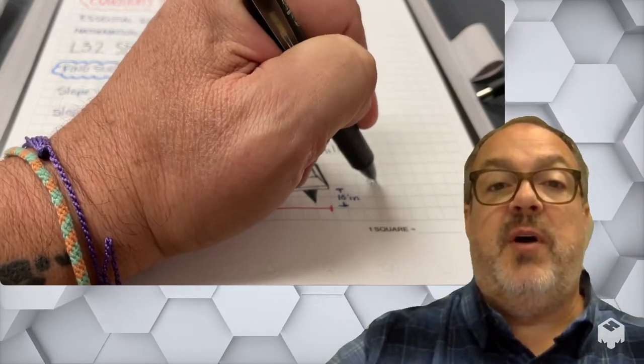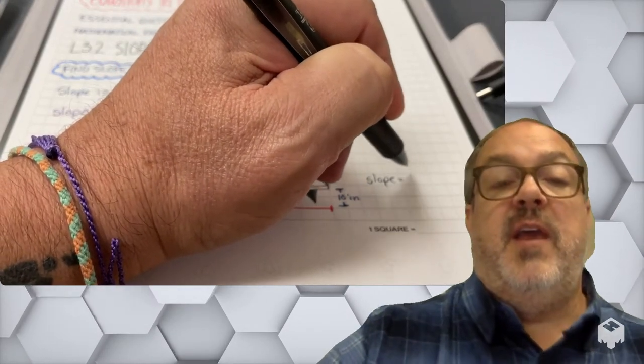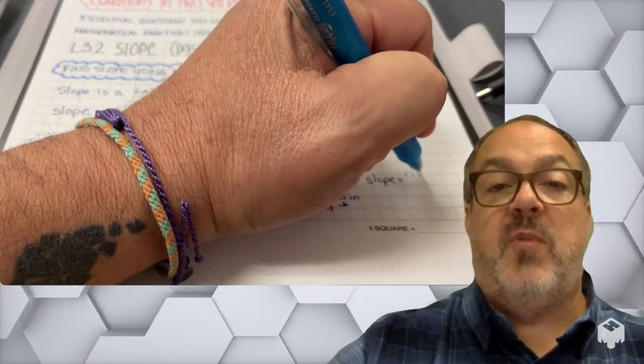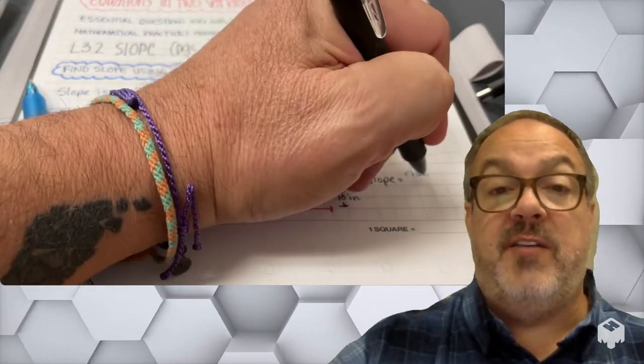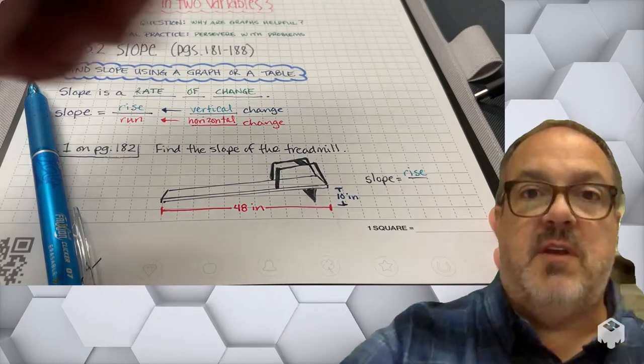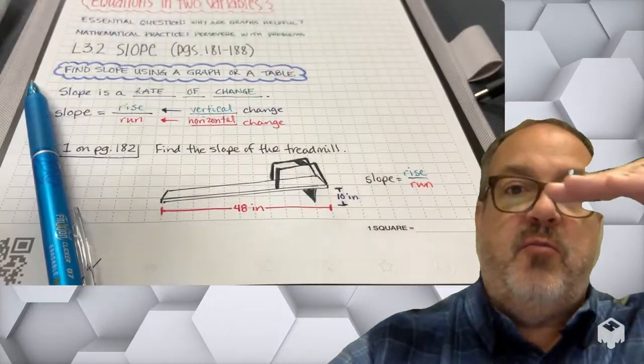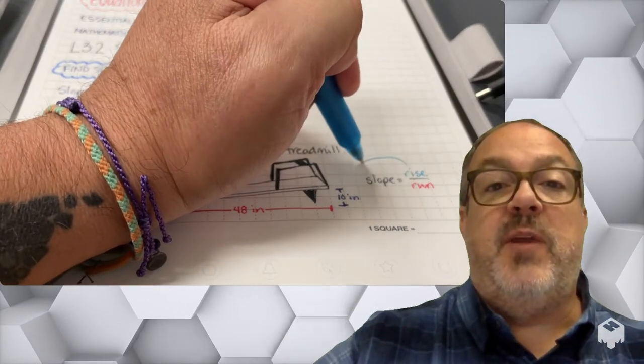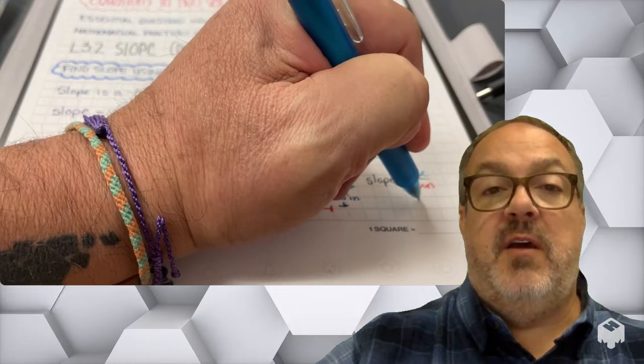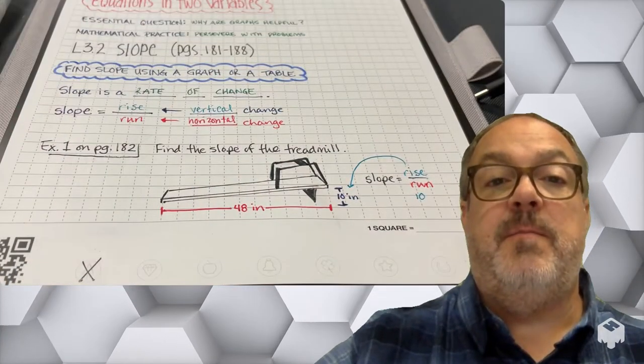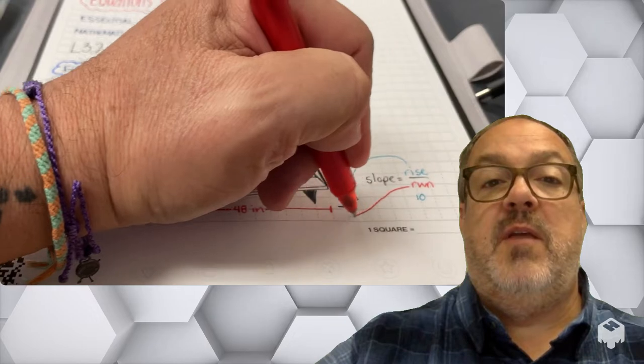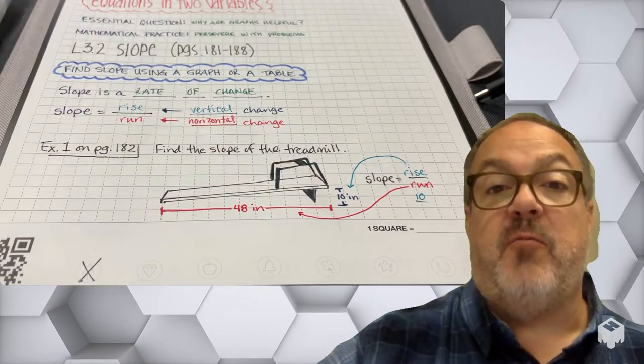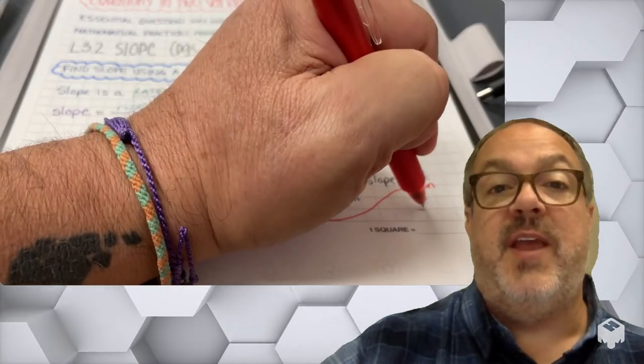So we're looking to find the slope of this treadmill. And so the slope is going to be a ratio of the rise over the run. Remember, rise is that vertical displacement, that vertical change. And the run is that horizontal movement. So here we have a rise of 10 inches. So we can think of that ratio as the slope, 10 over 48.